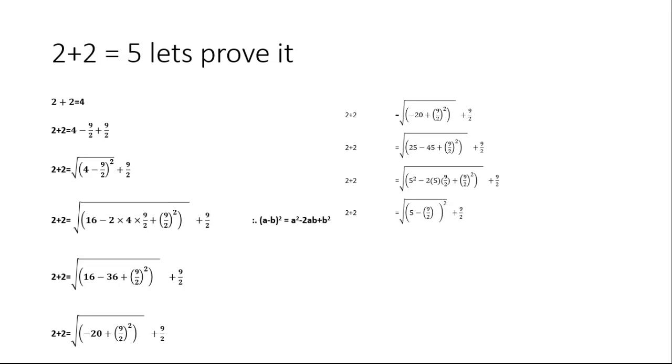Plus 9/2. The square root will cancel with square, and the equation becomes 5 minus 9/2 plus 9/2. Here minus 9/2 will cancel with plus 9/2, and 2 plus 2...